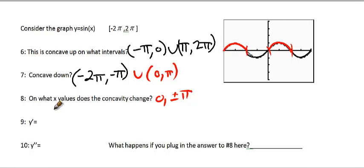Let's talk about the derivative, so cosine of x. And then the double derivative, negative sine of x. And again, you just do the derivative of your derivative, get your second derivative. What happens when you plug the answers to number eight in here? So if I plug in zero, well negative sine of zero is zero. Negative sine of pi is zero. Negative sine of negative pi is zero. So the second derivative, my double prime, is equal to zero for any of these values. So the point where the concavity is changing is where the second derivative happens to equal zero.